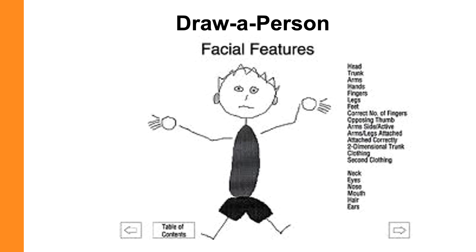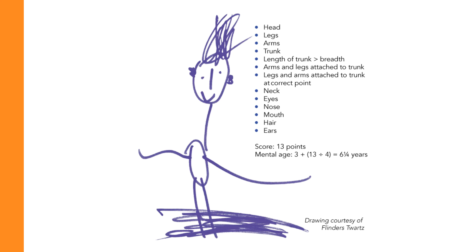Here's an example of a draw a person drawing. Not only can it be used as a projective personality test, it is also a developmental test to score visuospatial ability. In this particular case, the specific use was to assess the client's mental age — this was drawn by a child. You'll notice they are missing fingers and feet, aspects of the body that are not present. That resulted in a score consistent with a mental age of six and a quarter years. Although some psychologists swear by the draw a person as a personality test, it's probably more appropriately used as a test of brain dysfunction and visuospatial ability.